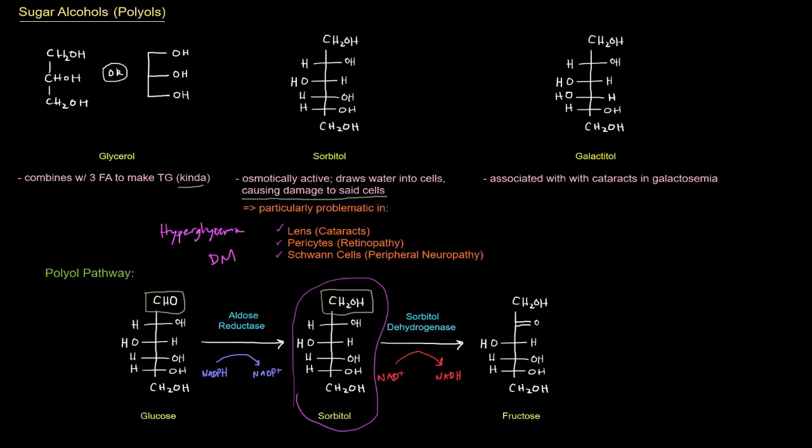And like I said, it's particularly problematic in those cells because of aldose reductase going through and just producing a bunch of sorbitol and that sorbitol not being converted into fructose. Galactatol shown up here is basically the same idea except it's produced from galactose though, which is also an aldose, remember it's a C4 epimer of glucose. So galactose is converted into galactatol by that aldose reductase.